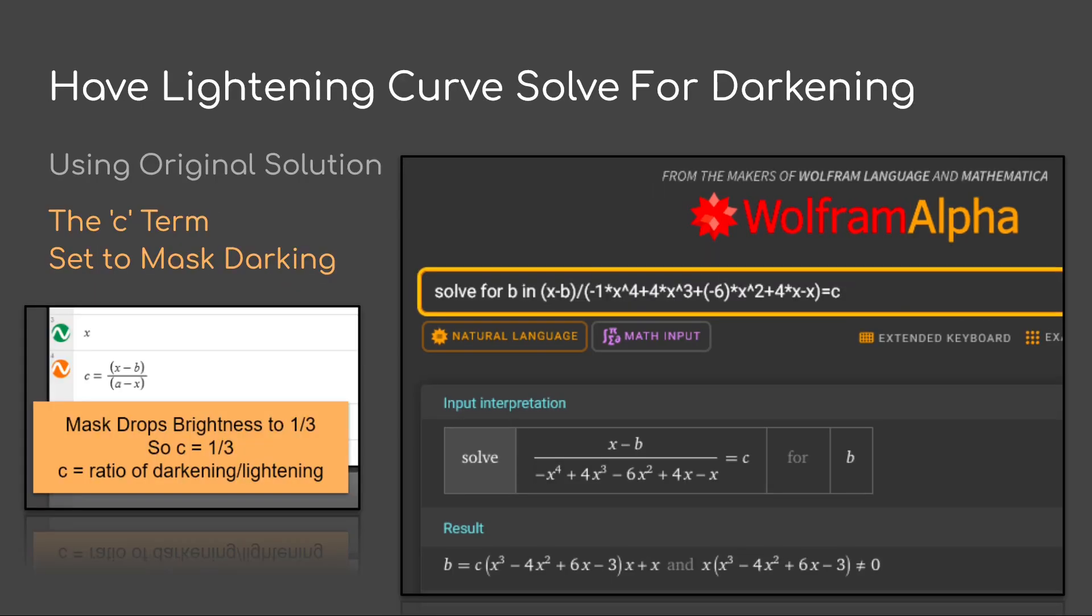Once we have the lightning curve, we can all solve for the darkening curve. Now we're looking at the original curve that I showed a solution for.